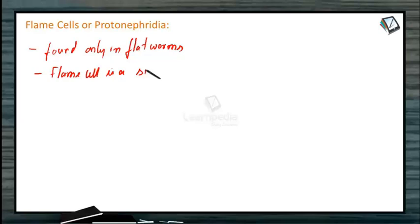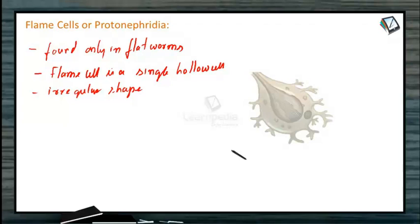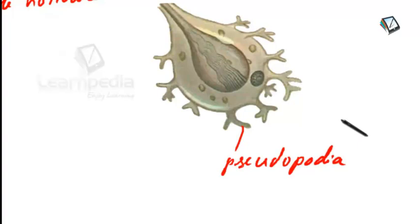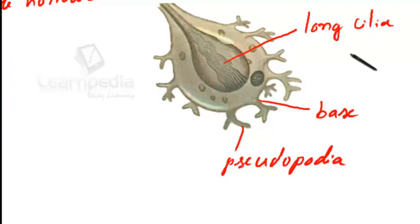Each flame cell is a single hollow cell. Usually they are of irregular shape, which send out some pseudopodia processes into the surrounding tissues. At its broad base, there closes a tuft of long cilia or flagella.